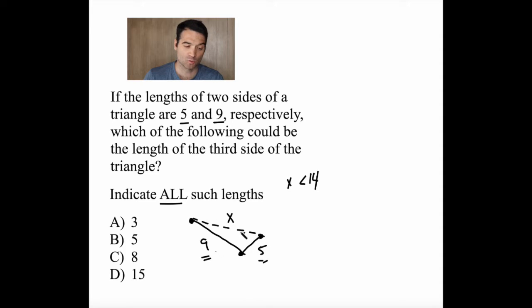And on the other end, if these two were right next to each other, x could not be smaller than the difference between these two. So 9 minus 5. Or 4.